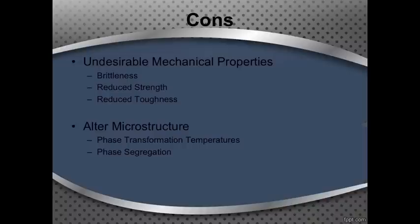You can also have an alteration in microstructure that is something you don't want. You can change the transformation temperatures at which these phases happen. For example, if you're not trying to form martensite and you add an alloying addition that changes that temperature, you could end up forming martensite when you're trying not to. You also could get some phase segregation, but I'll talk more about that when I get into the specific elements.